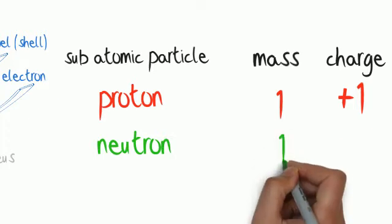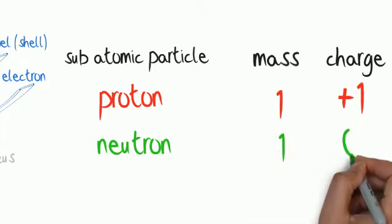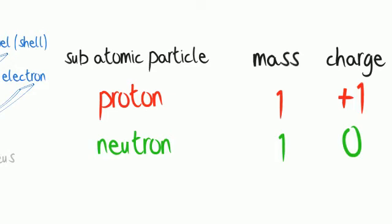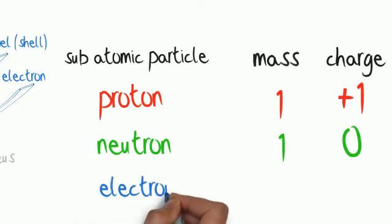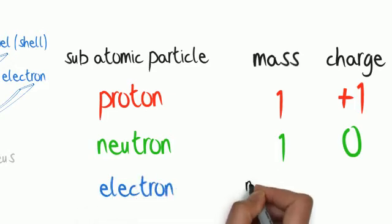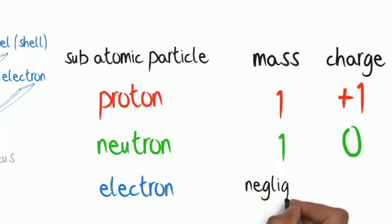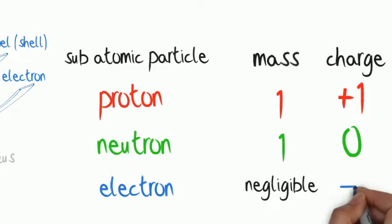Neutrons have a relative mass of one, but they don't have a charge. They have a charge of zero. Electrons have a negligible mass. That means they have a very small mass. But they do have a charge, which is minus one. Electrons are negative.